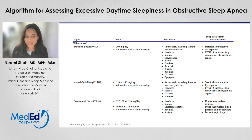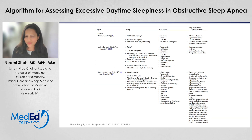Solriamfetol — the oral contraceptive interaction is not really a concern; it can be used in individuals on OCPs. However, you do want to be careful in individuals with cardiovascular disease, because it can elevate blood pressure. Pitolisant is not yet formally indicated for OSA, but you can consider it if the other medications aren't working, and it's pretty well tolerated for the most part.